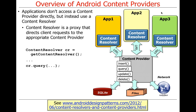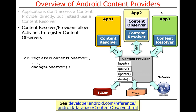There's another interesting thing you get with content resolvers and content providers: the ability to automatically register to receive notifications when state in the content provider changes. This is the observer pattern — it defines a one-to-many relationship between objects so that when one object changes state, an untold number of other objects can be notified automatically.